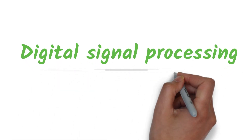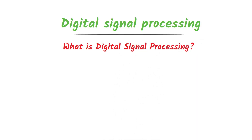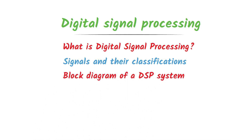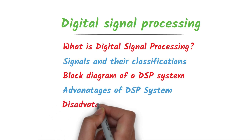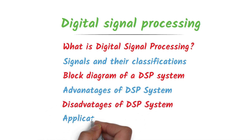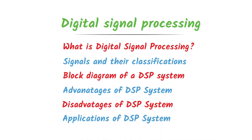Hey everyone, welcome to this lecture series on digital signal processing. This is the first video in the lecture series and in this video, we will introduce ourselves to digital signal processing. Here is the outline of this video. We will see what is meant by digital signal processing, then we'll talk about signals and their classifications. Later, we will see the block diagram of a DSP system, followed by the advantages, disadvantages, and applications of a DSP system. So, let's get started.